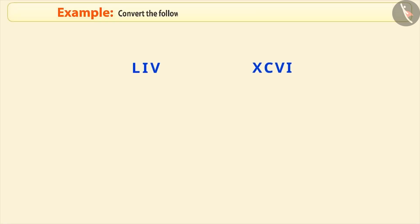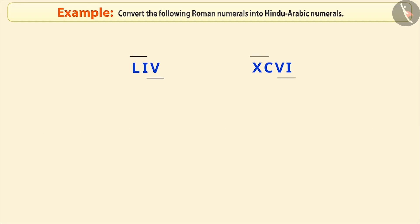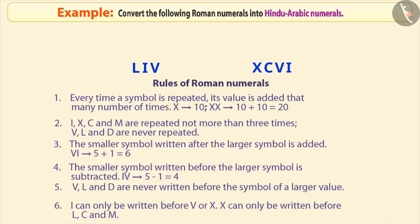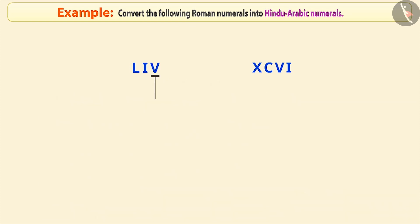Next example: convert the following Roman numerals into Hindu-Arabic numerals. To convert them to the Hindu-Arabic number system equivalent, we observe the numerals from right to left. Following the rules, we can convert them to the Hindu-Arabic numerals.